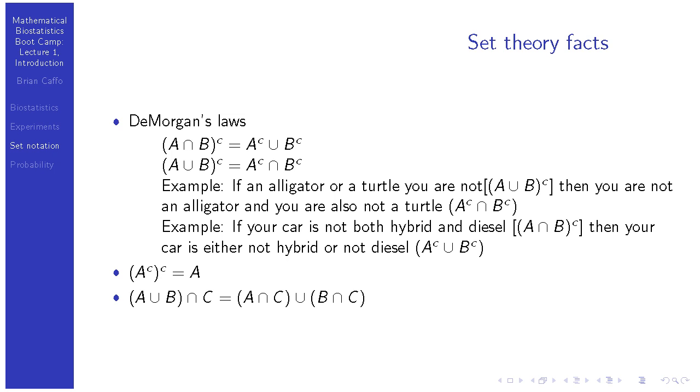Okay, so I struggled to come up with a verbal example of De Morgan's Laws, and here's the best I could do. So, let's let A be the event that you're an alligator, and B be the event that you're a turtle. So, the event that A union B is the event that you are either a turtle or an alligator. And then, complementing that, that means if an alligator or a turtle you are not, then De Morgan's Law says that's A complement intersect B complement. A complement is you are not an alligator. B complement is you are not a turtle. So, the set theory association with the English would be if an alligator or a turtle you are not, then you are not an alligator, and you are also not a turtle. Those are the equivalents between those two sentences. I think everyone would agree those two sentences agree. Another example for the second De Morgan's Law, if your car is not both hybrid and diesel, so A is the event that your car is hybrid, B is the event that your car is diesel, and you complement their intersection. So, if your car is not both hybrid and diesel, then your car is either not hybrid or not diesel. So, A complement union B complement.